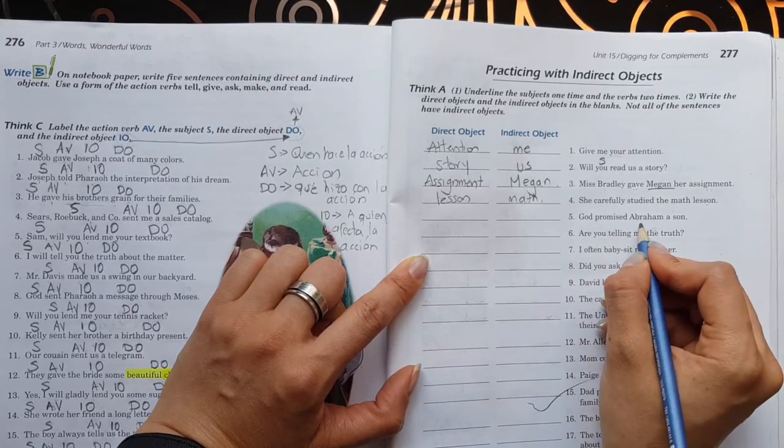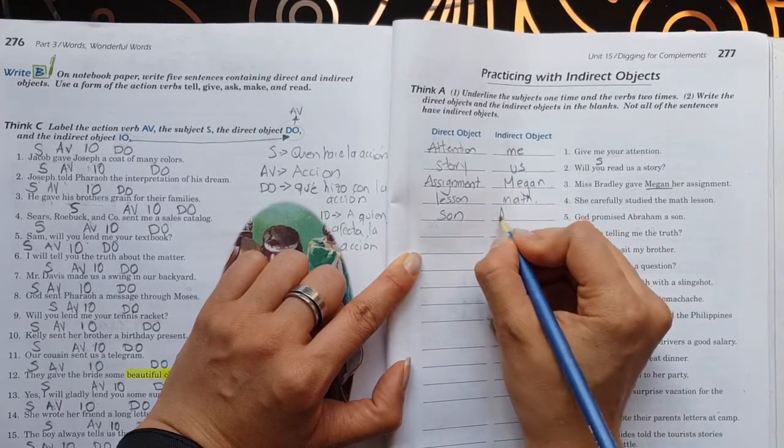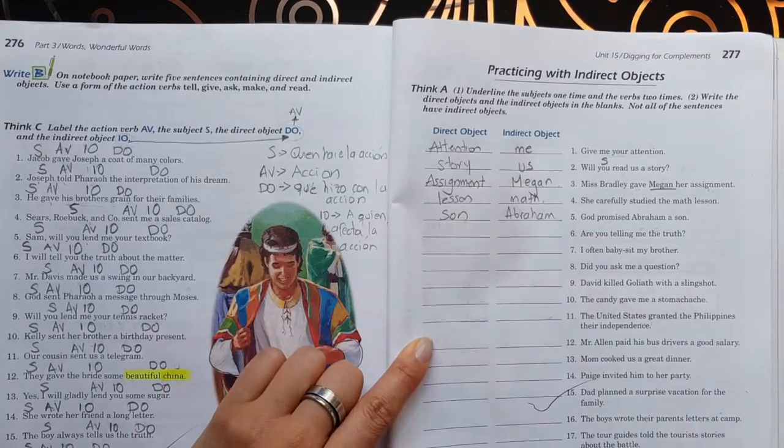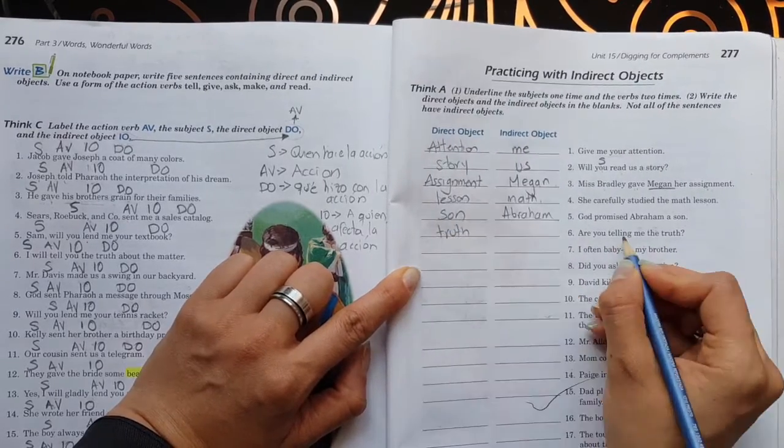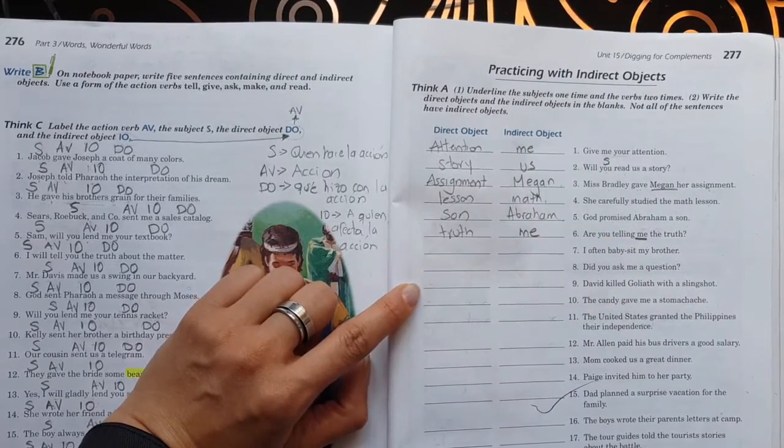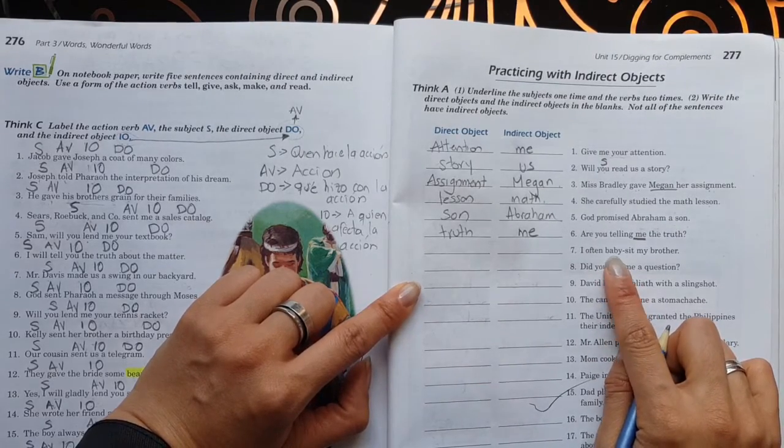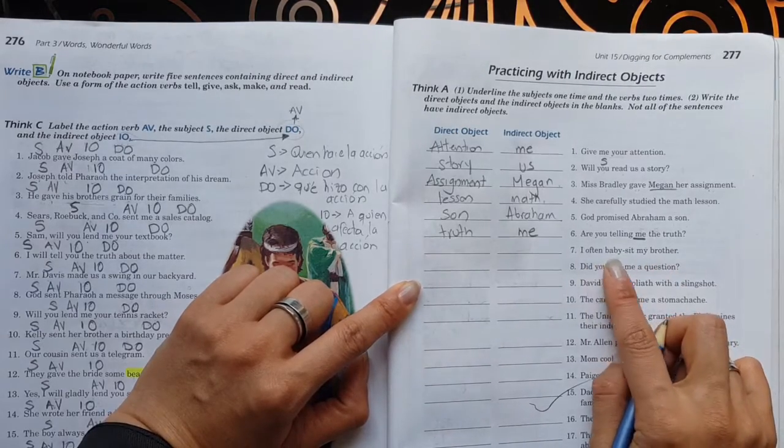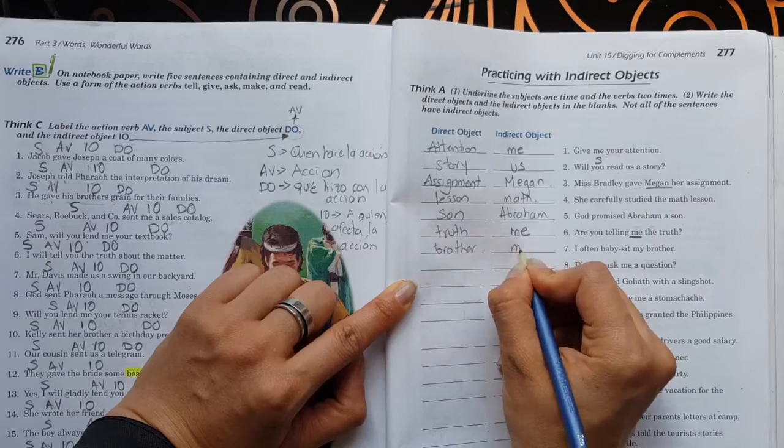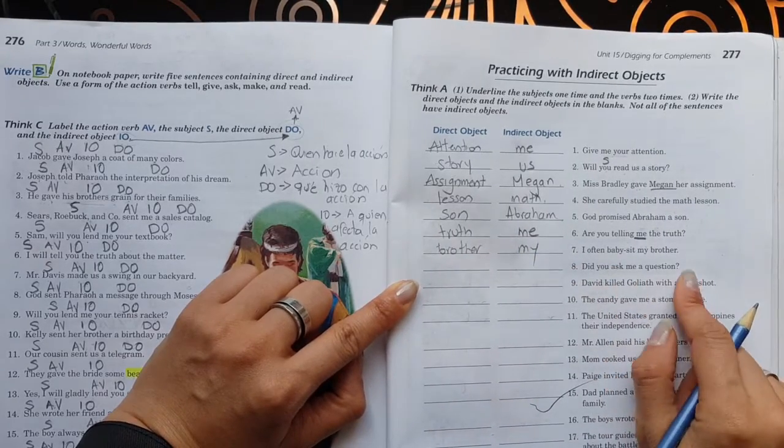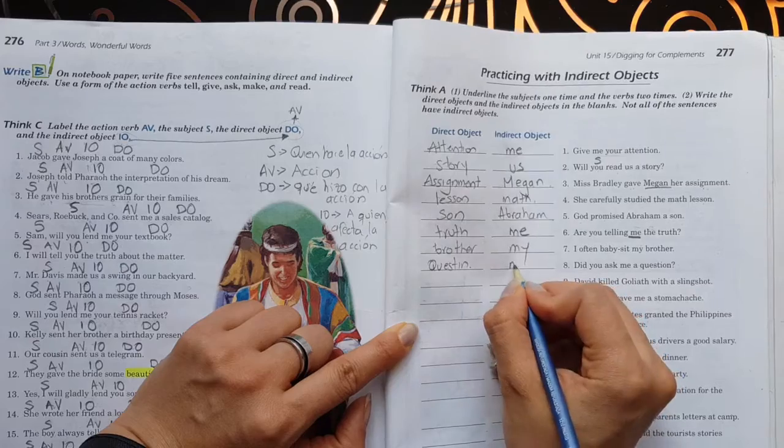Número cinco. God promised Abraham a son. Dios le prometió. ¿Qué prometió? Un hijo. ¿Y a quién se lo prometió? A Abraham. Número seis. ¿Me estás diciendo la verdad? ¿Estás diciendo qué? La verdad. ¿Y a quién se la estás diciendo? A mí. Luego dice. Yo usualmente cuido. ¿A quién? Al hermano. ¿De quién? Mío. Tú me preguntaste una pregunta. Tú me hiciste una pregunta. ¿Qué hiciste? Una pregunta. Question. ¿Y a quién se le hiciste? A mí. A eso se refiere. Objeto directo. Objeto indirecto.